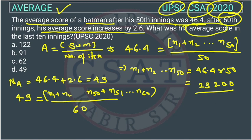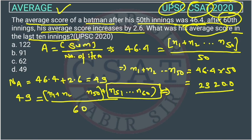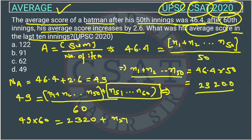So what was his average score in the last 10 innings? We need to calculate the average score of innings 51 to 60. We already know N1 + N2 + ... + N50 = 2320. Now: 49 × 60 = 2320 + N51 + ... + N60. Bringing 2320 to the other side: N51 + ... + N60 = 49 × 60 − 2320.